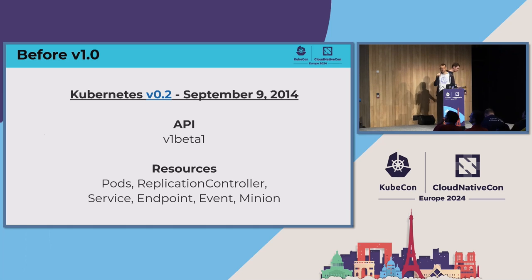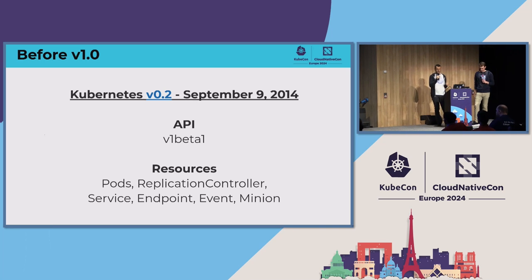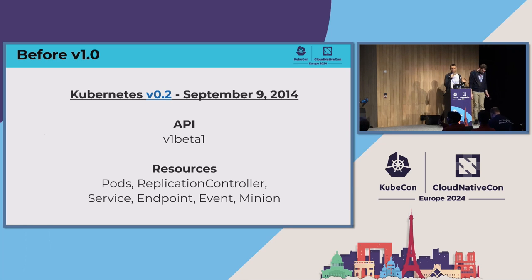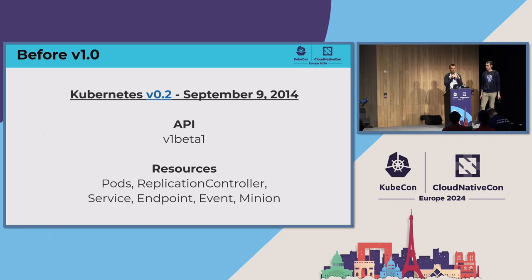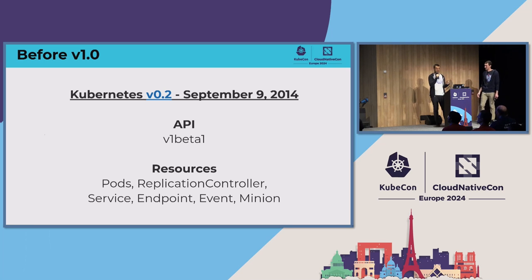So, 10 years. We want to spend a little time focusing on what 10 years means for SIG CLI. A quick history rundown: back in 2014 when Kubernetes was released, version 0.2 around September was the first tagged version. At that point in time, Kubernetes had only one API group — there was no apps, policy, RBAC, storage, or any of the various groups you're familiar with today. It was V1 Beta 1, and it only had six resources.